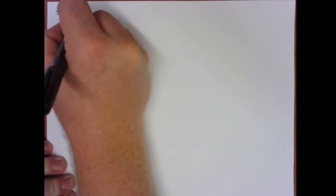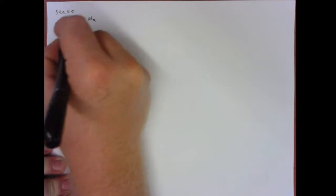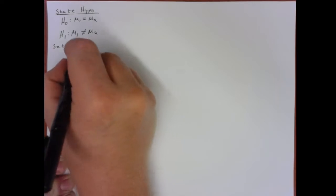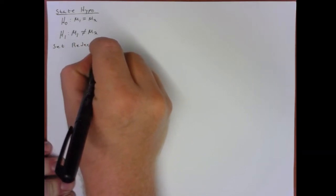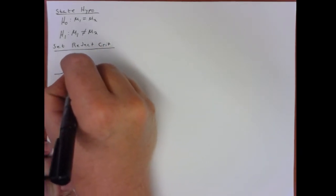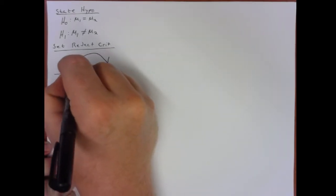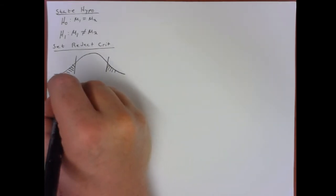We're going to do it the more difficult way first because it really illustrates how a Tukey's HSD test works. You would still state your hypotheses — the population means are equal versus they are not equal — and then set your rejection criteria. We draw out our distribution, look up a critical value, and get two critical regions since this is two-tailed.